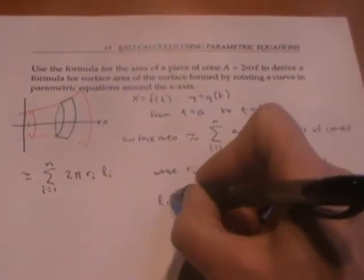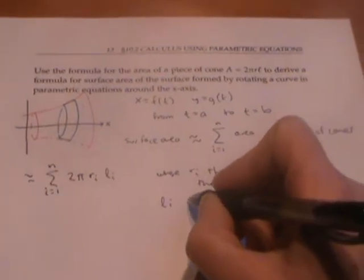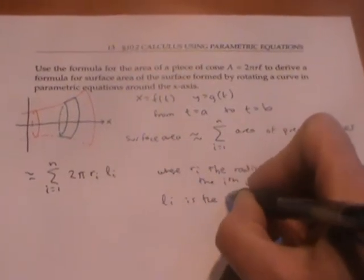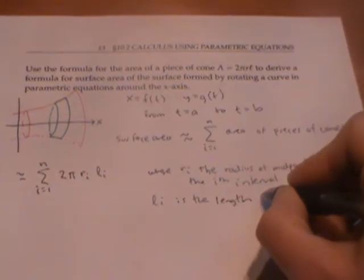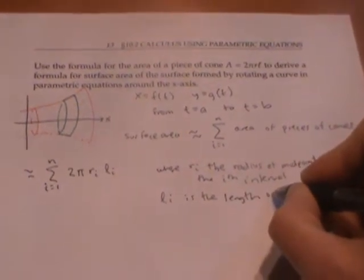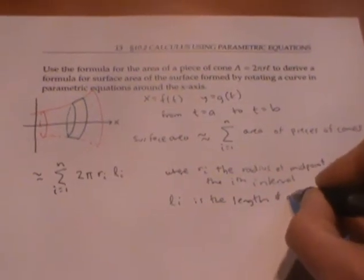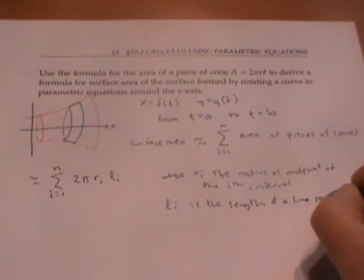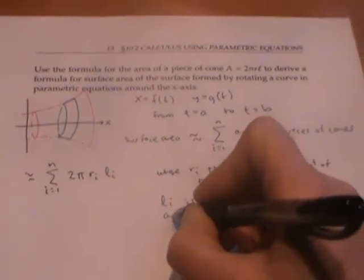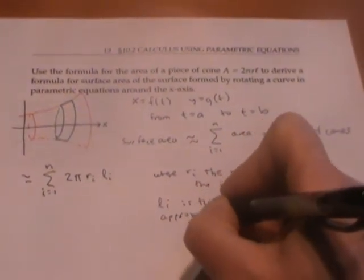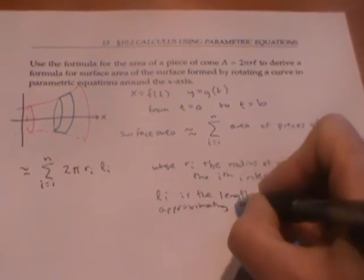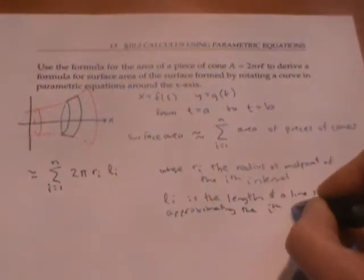And l_i is the length of a line segment approximating the i-th piece of curve.